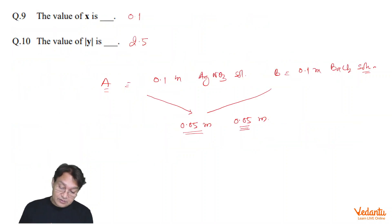So, for solution A, we simply have delta TB equals KB into M, which is equal to 0.5. That was KB, which was given,